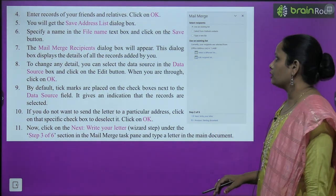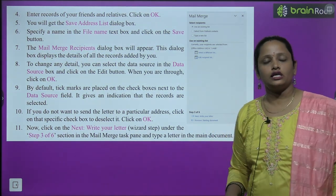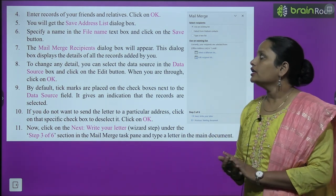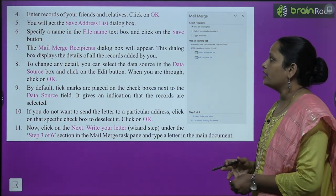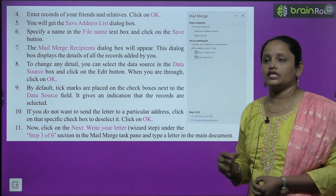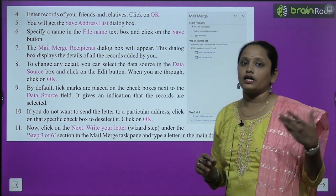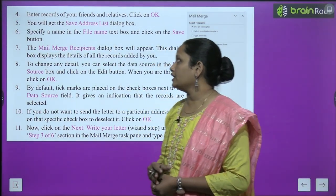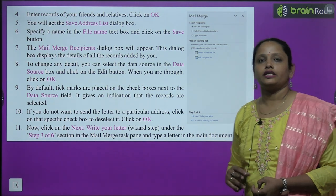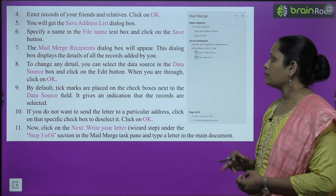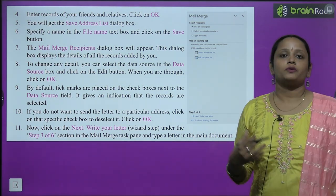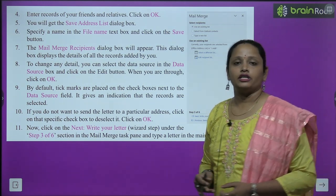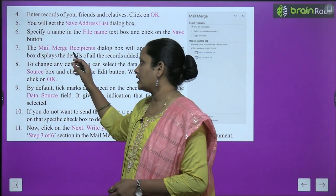Enter records of your friends and relatives and click OK. You will get the Save Address List dialog box. Specify a name in the File Name text box and click the Save button.